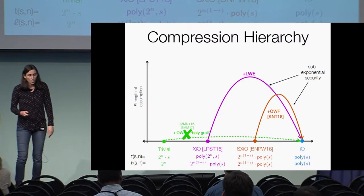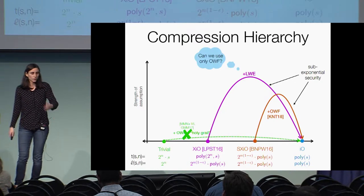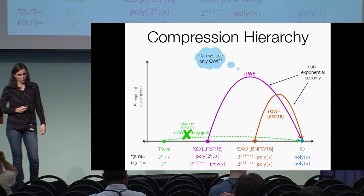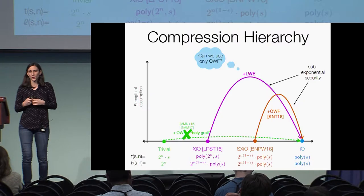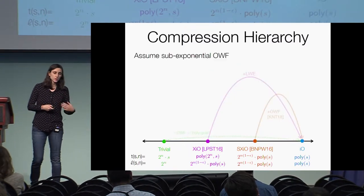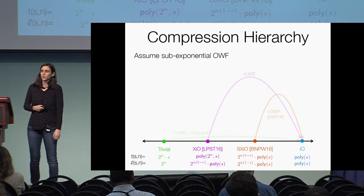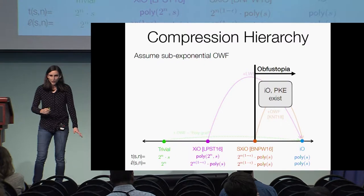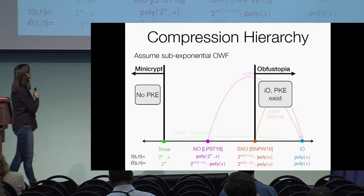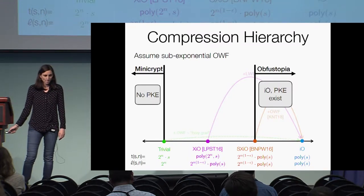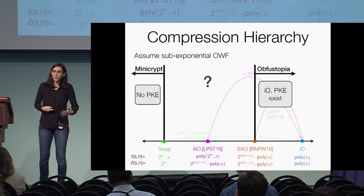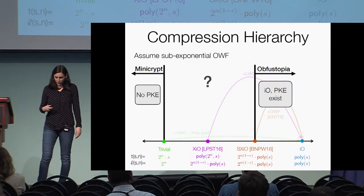Nevertheless, there's still room for improvements between these known results and the holy grail. For example, one such improvement is: with XIO, why do we need LWE? Can we use only one-way functions? Another strong motivation for looking at relaxations of IO is to see if there's some relaxation which retains much of the power of IO but is easier to construct. Towards this end, suppose we're willing to assume sub-exponential one-way functions. Then, assuming SXIO, we can already get IO and all of its applications like public key encryption. On the other hand, if we're only assuming one-way functions, then at the trivial obfuscator we only have MiniCrypt — no public key encryption. Thus, there's a huge gap in our knowledge surrounding XIO. In this work, we focus on this setting of parameters and try to answer some of these questions.